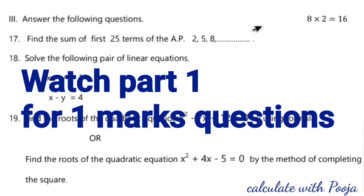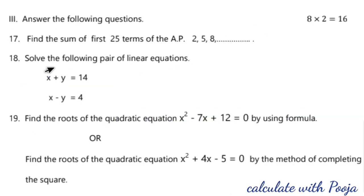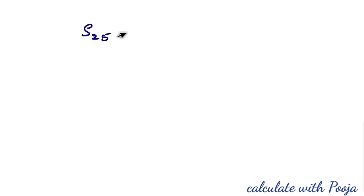Next, the third main 2-marks question. We have to find the sum of the first 25 terms of the AP: 2, 5, 8. So we have to find S₂₅.